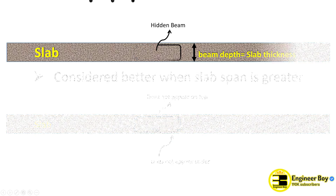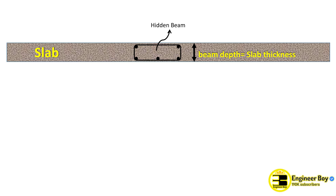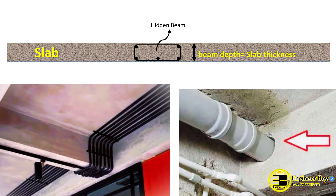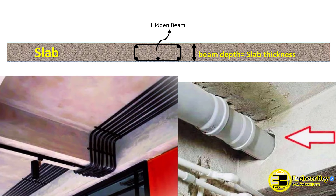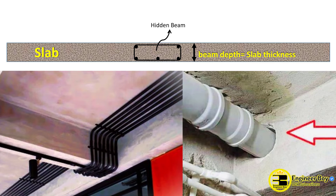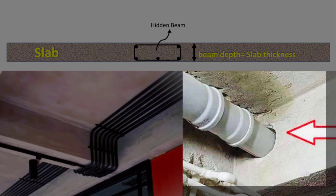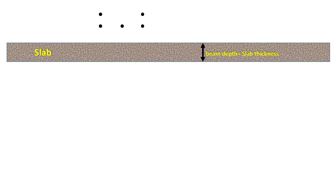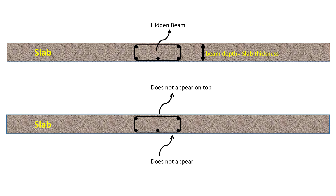Also, if you remember, it is constructed at a depth equal to the thickness of the slab. That's why we can say it saves floor height clearance, which also clears the way for electrical and sanitary lines above ceilings. And if you know any other information about the hidden beam, let me know in the comment section.